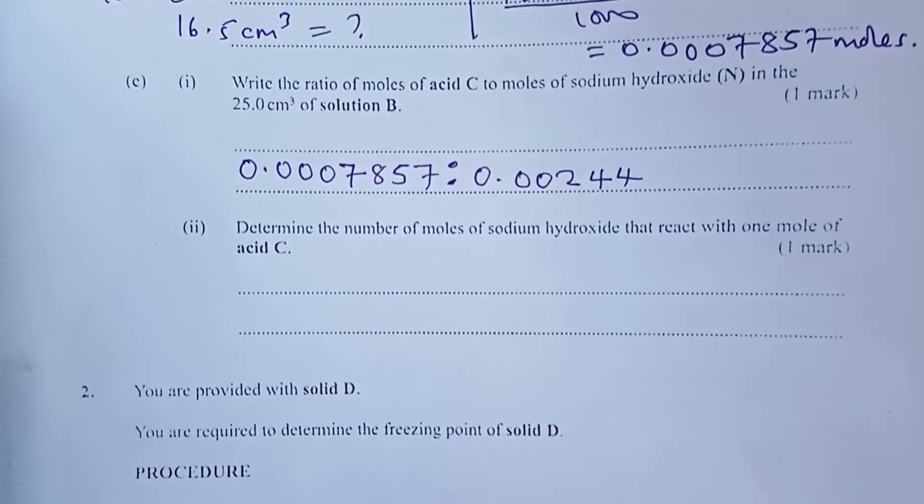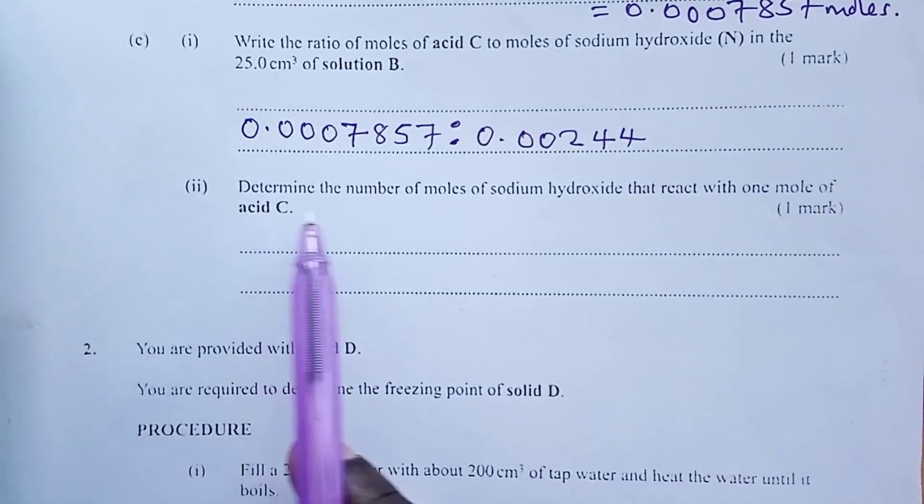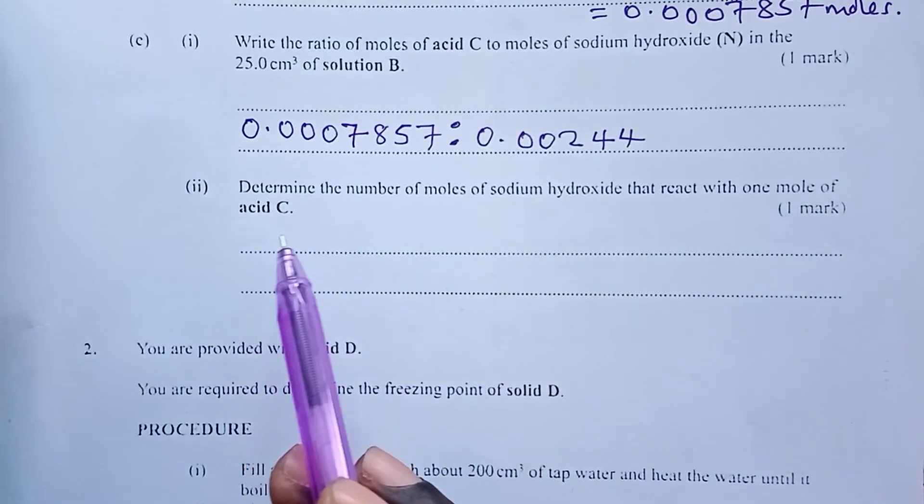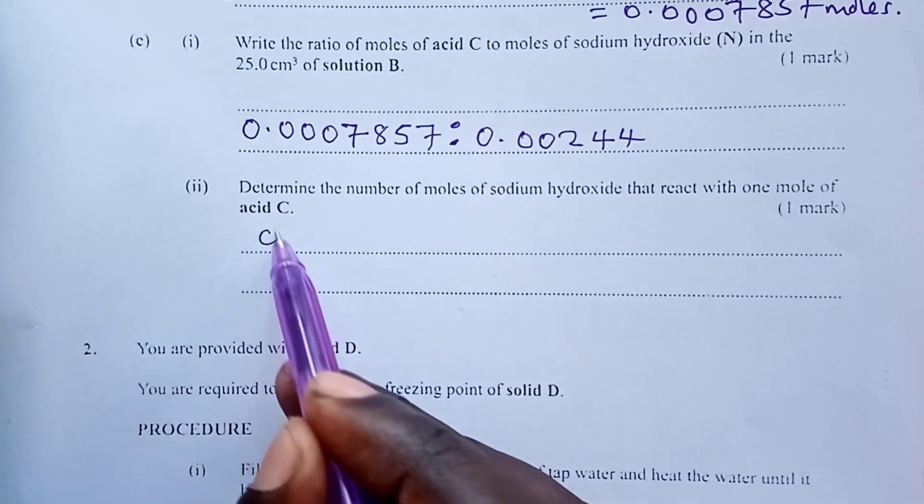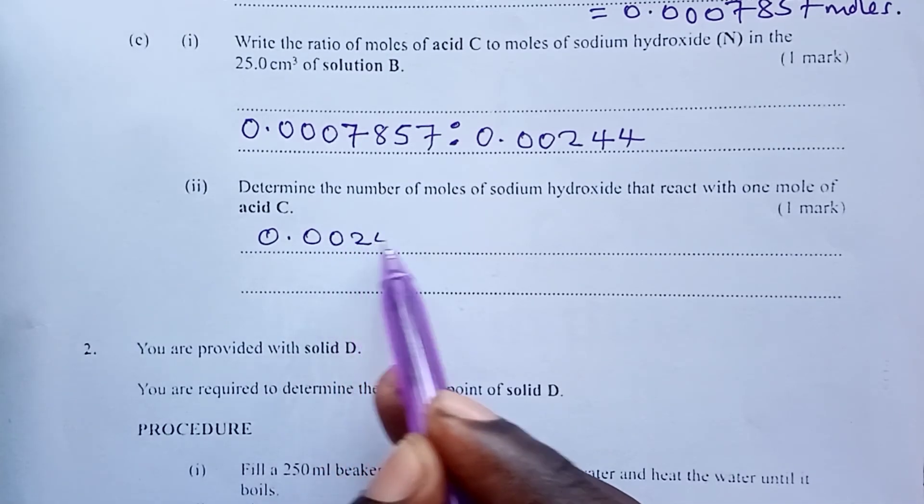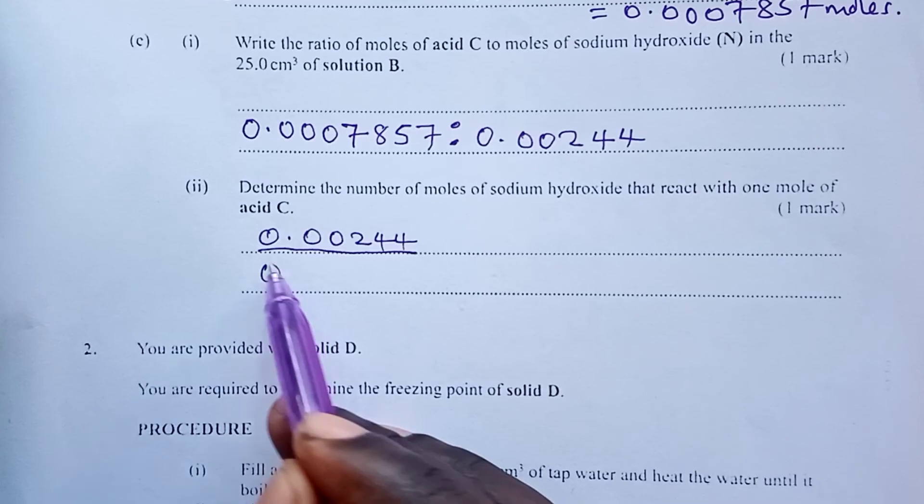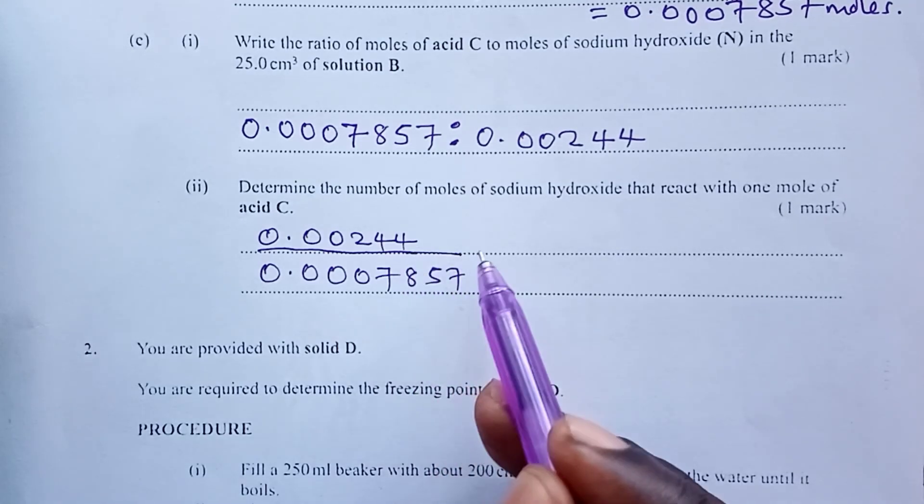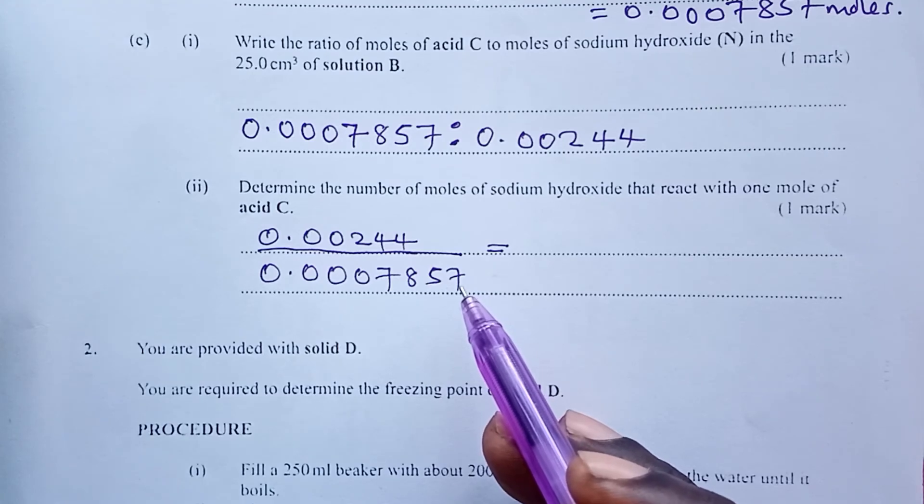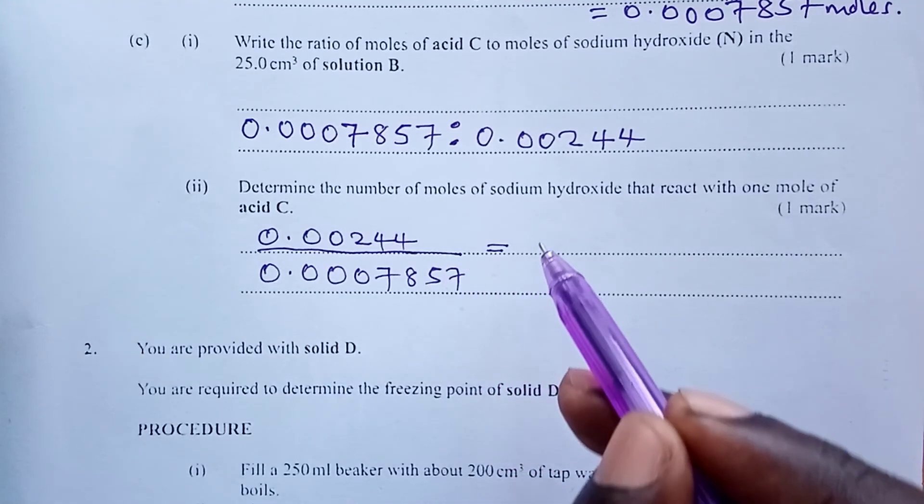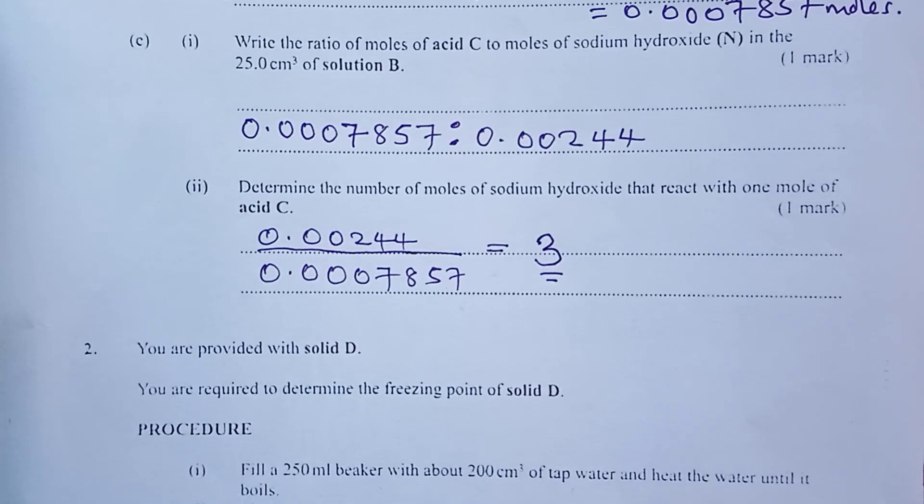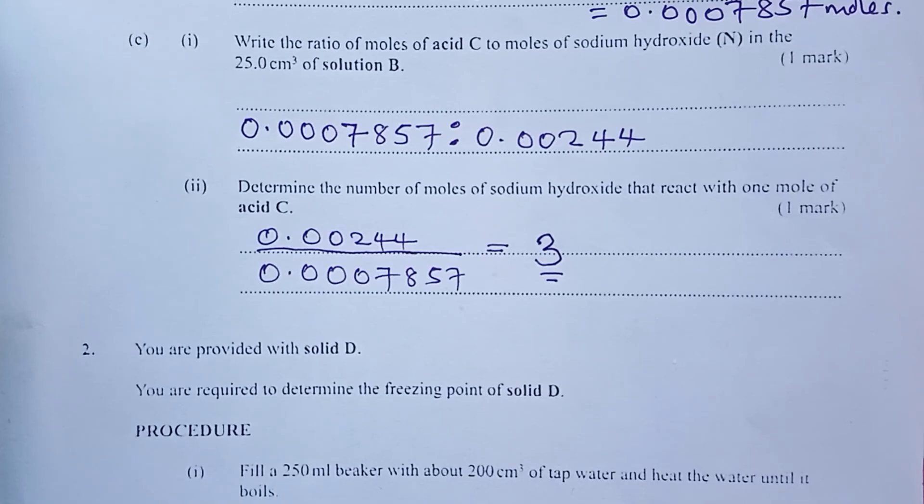Now, we end by answering the question which asked, determine the number of moles of sodium hydroxide that react with one mole of acid C. So to answer this question, we shall divide moles of sodium hydroxide by moles of acid C. And if you do this division, we get something like 3.1055. But because it has to be a whole number, the answer we get here is 3. So the number of moles of sodium hydroxide that react with one mole of acid C is 3 moles.